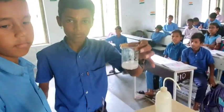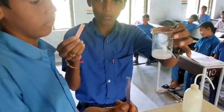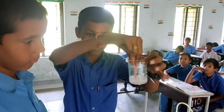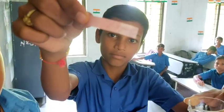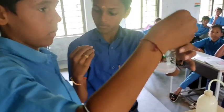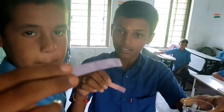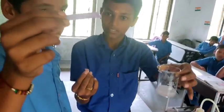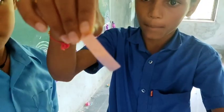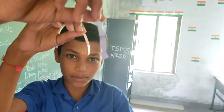Now we have taken the Soap Solution. First we dip the Red Litmus Paper into the Soap Solution — it is changing into blue color. Next, the Blue Litmus Paper remains blue. So here we can say that the Soap Solution is basic in nature: Red Litmus changes to blue, and Blue Litmus remains blue.